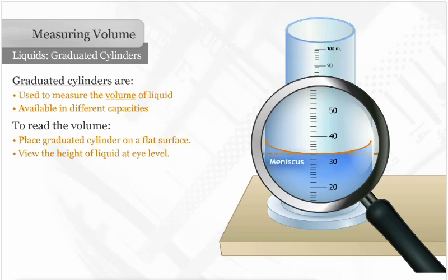To get the most accurate measurement, read the volume at the bottom of the meniscus. In this example, the volume is 33 and two-tenths milliliters.